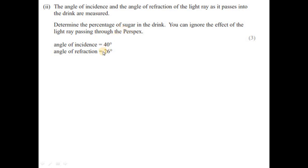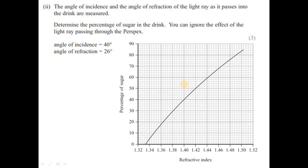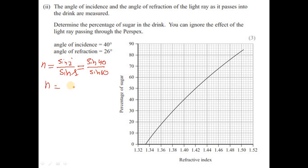First, we find the refractive index using n = sin i / sin r, since this is a rarer-to-denser transmission. So n = sin 40° / sin 26°, giving n ≈ 1.47. Now we use the graph to find the corresponding sugar percentage — 1.47 is located on the graph near 1.46.